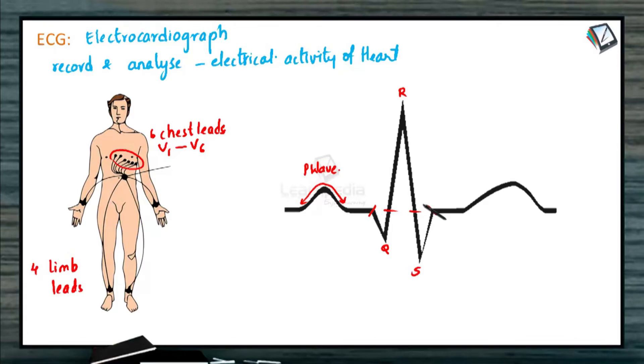So this occurs due to the spread of the impulse of contraction from the AV node and through the bundle of His and the Purkinje fibers resulting in the contraction of the ventricles. This occurs for around 0.08 to 0.1 second.